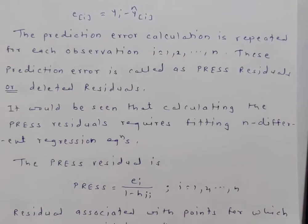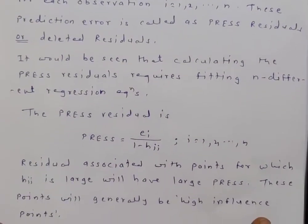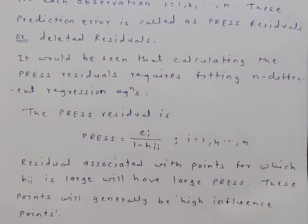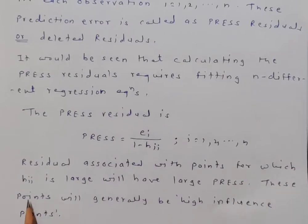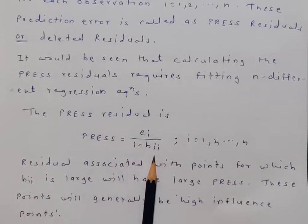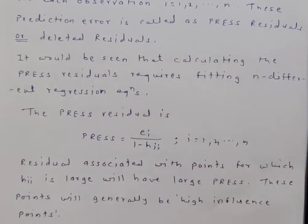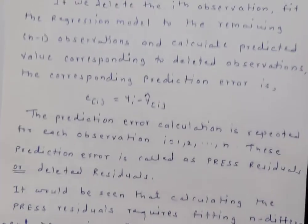Residuals associated with points for which h_ii is large will have large PRESS values. If h_ii is large, the denominator (1 − h_ii) is small, making the PRESS value large. These points are generally high-influence points, meaning they can correspond to outliers.